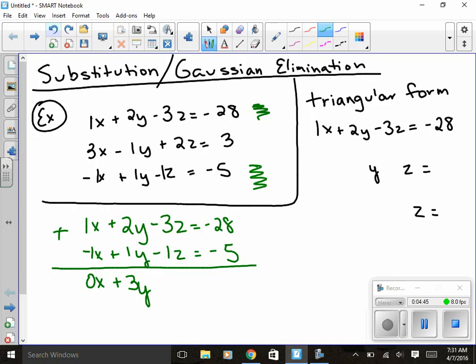They would go -3 minus 1, well that might work but it might not. If this were to be a negative over here, you'd really be adding one, so that's why I'm telling you have to be cautious. So -3 - 1 is -4, so -4z, and then I've got -28 + -5 which gives me -33. Okay, so I'm going to go ahead and write that equation in. I've got it, I can put it in my triangular form. So I've got 3y - 4z = -33.